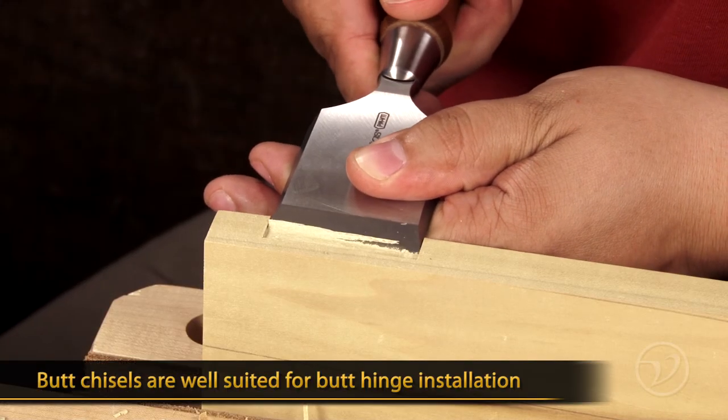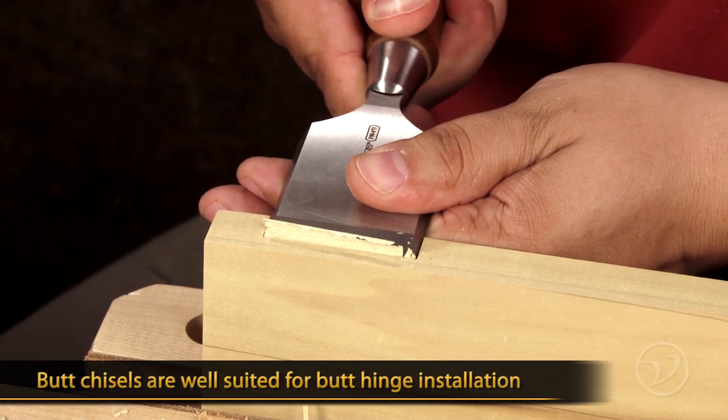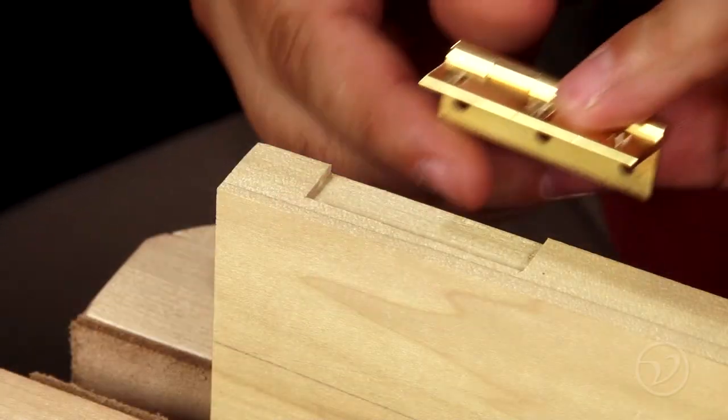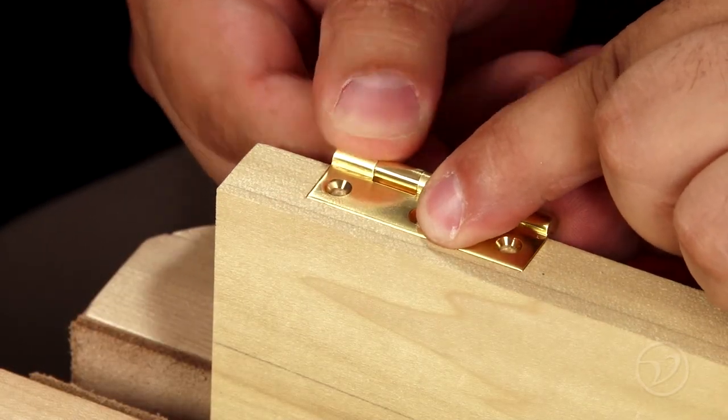Butt chisels are well suited for butt hinge installation, allowing you to easily clear waste in one pass, ensuring a flat mortise base for a good reveal.